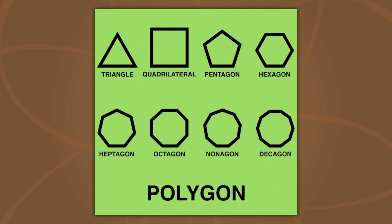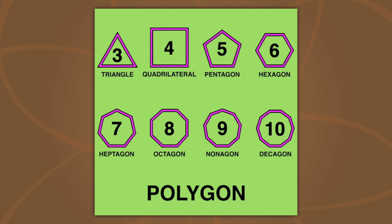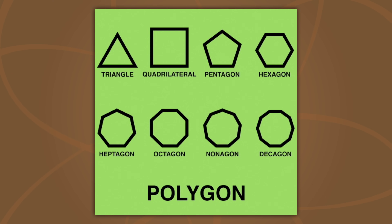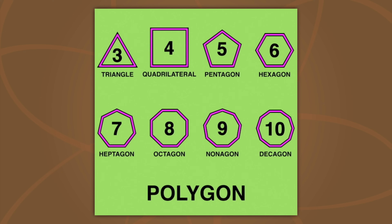A polygon is a shape with lines that connect. The number of sides tells us the name of the shape.